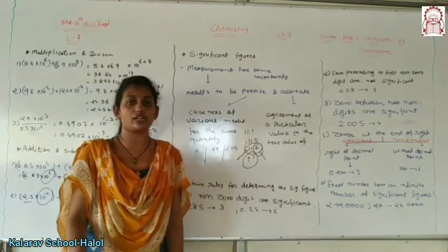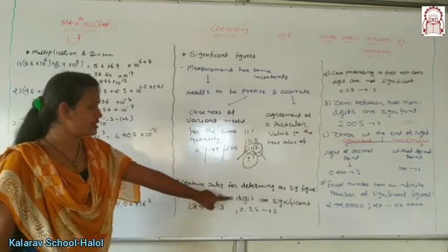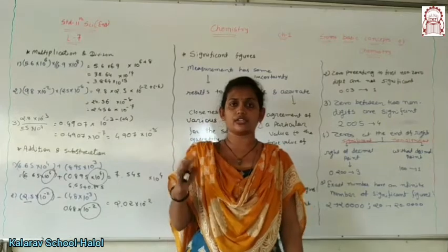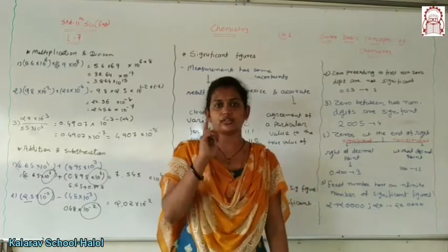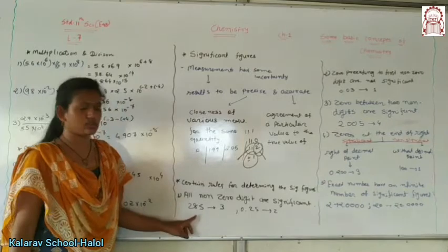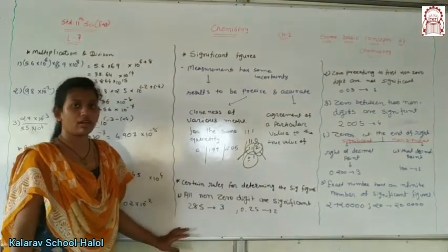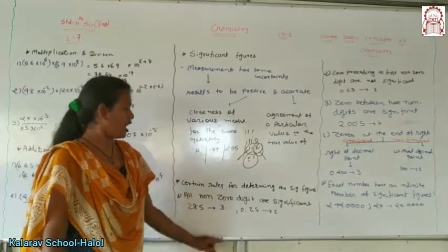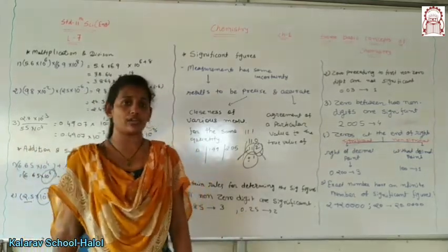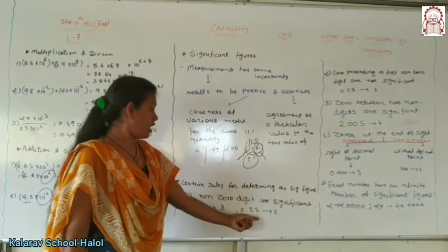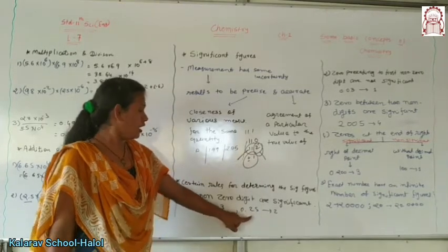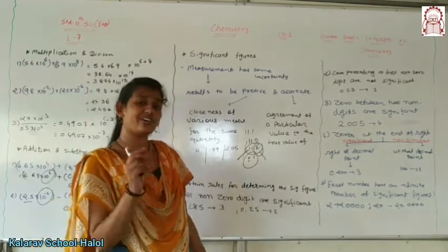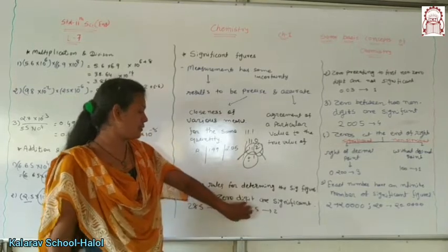The first rule is: all non-zero digits are significant. That means any digit above zero is significant. For example, in 285, those could be 2, 8, 9 — all significant figures. In 0.25, the digits 2 and 5 are significant, but the zero before the decimal point only indicates the decimal — it cannot be counted as a significant figure. So in 0.25, there are only 2 significant figures. Second point: zeros preceding the first non-zero digit are non-significant. Those zeros, like in 0.03, are just placeholders — non-significant.